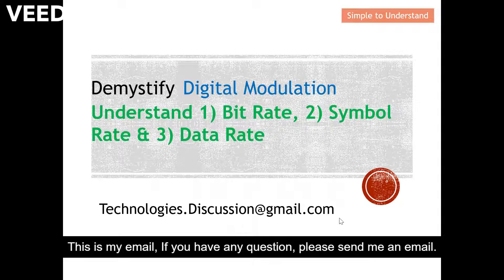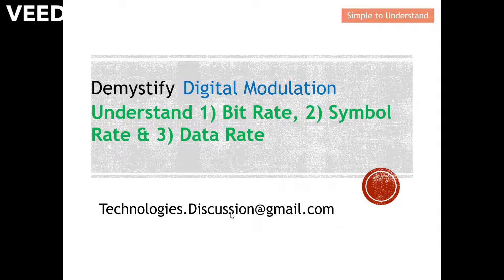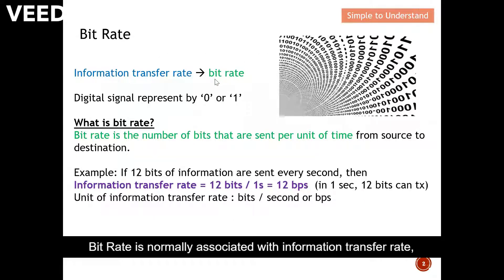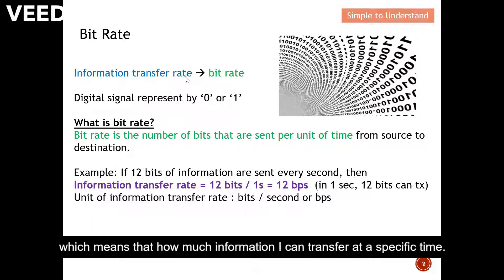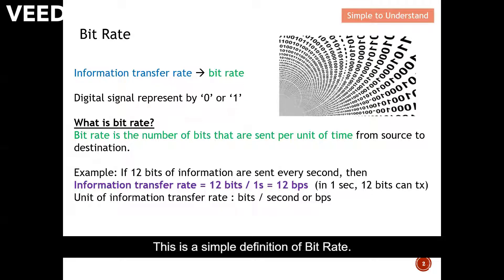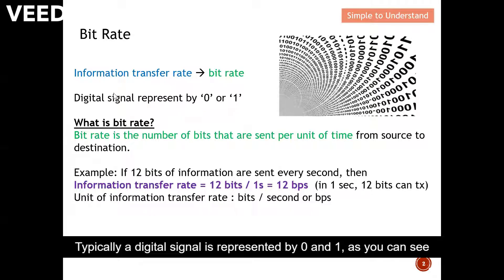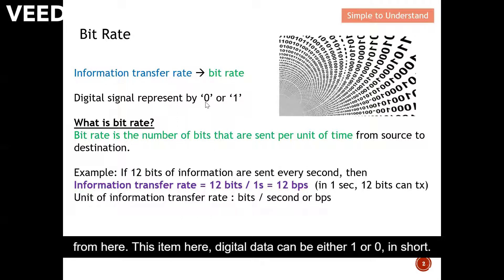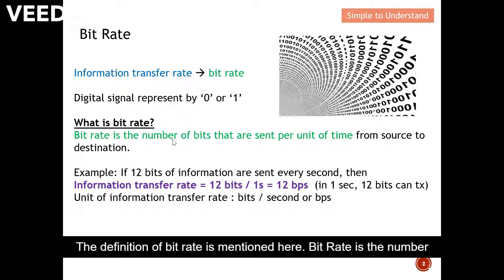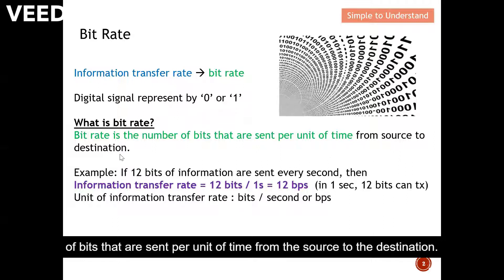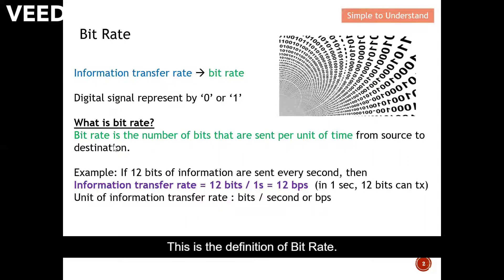This is my email if you have any questions. Bit rate is normally associated with information transfer rate, which means how much information can be transferred at a specific time. A digital signal is represented by zeros and ones — a digital data can be either one or zero. The definition of bit rate is the number of bits that are sent per unit of time from the source to the destination.